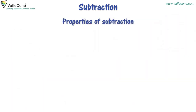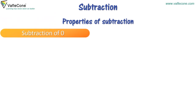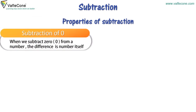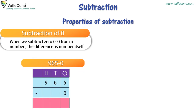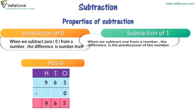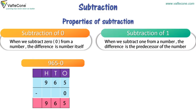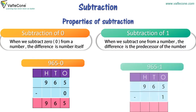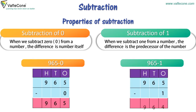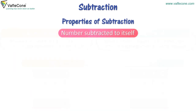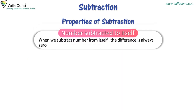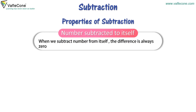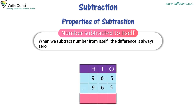Properties of subtraction. Subtraction of 0: when we subtract 0 from a number, the difference is the number itself. For example, 965 minus 0 is equal to 965. Subtraction of 1: when we subtract 1 from a number, the difference is the predecessor of the number. For example, 965 minus 1 is equal to 964. When we subtract a number from itself, the difference is always 0. For example, 965 minus 965 is equal to 0.